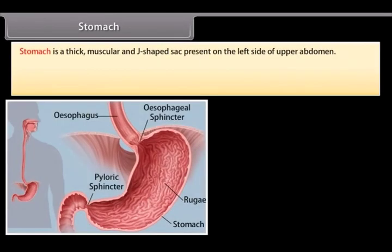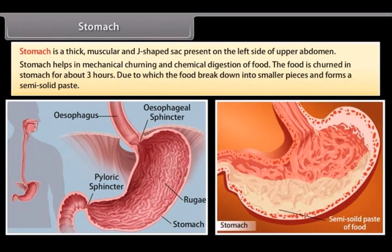The stomach is a thick, muscular, J-shaped sac present on the left side of the upper abdomen. It helps in mechanical churning and chemical digestion of food. The food is churned in the stomach for about three hours, during which the food breaks down into smaller pieces and forms a semi-solid paste.